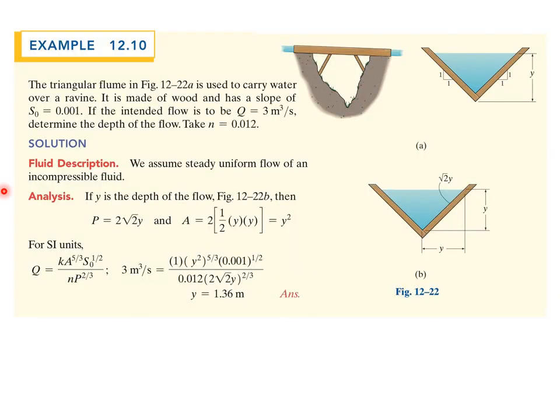Example 12.10. Here we have a triangular flume used to carry water over a ravine. This shows the diagram of it. It's made of wood and has a slope of 0.001. If the intended flow is to be 3 cubic meters per second, determine the depth of the flow. Take n to be 0.012. We're going to assume steady, uniform flow of an incompressible fluid. The water obviously is incompressible.